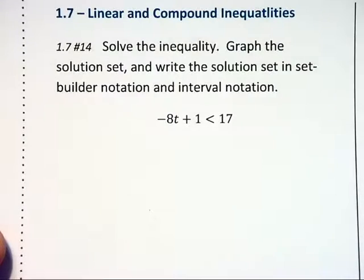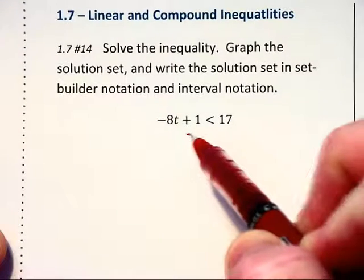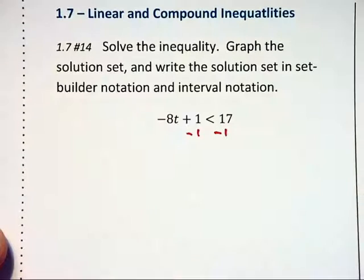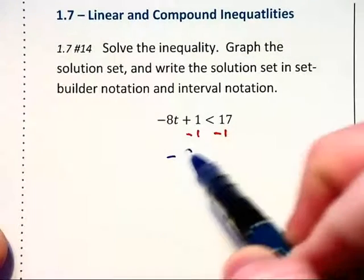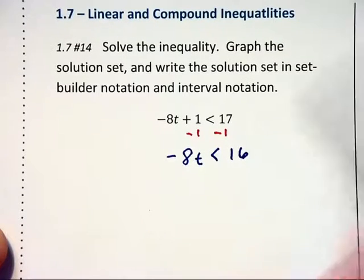We see our first inequality here and we want to isolate the variable on the left hand side. So we will begin by subtracting 1 on each side. This will give us negative 8t on the left and 16 on the right.